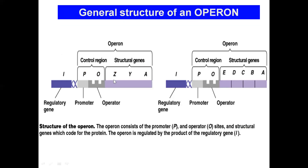All those genes which are together in a transcriptional unit are regulated together. If there are two, three, four, five, or six genes arranged sequentially, their expression is regulated all together. Here we can see an example of two operons: on the left is the lac operon — the bacterial lactose utilization operon — and on the right is the tryptophan operon. The lac operon has three structural genes: Z, Y, and A, whose expression is regulated together. Upstream of the structural genes there is a regulatory gene.